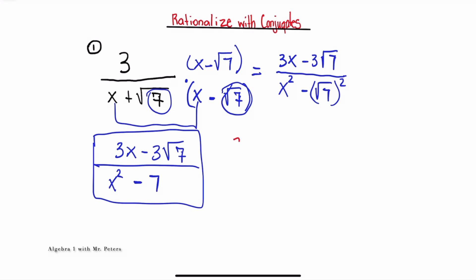Our answer is going to be 3x minus 3 times radical 7 over x squared minus 7. Another way they may express this answer is to pull out that 3 and have inside parentheses x minus radical 7, with the denominator staying the same. Even though it looks like the difference of squares, 7 is not a perfect square so we can't break that down any further.